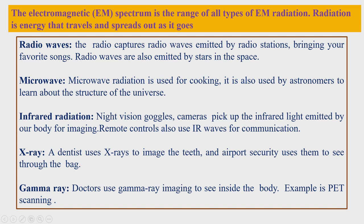The next frequency range is very low frequency, which includes the higher end of human hearing, up to about 15 to 20 kHz. This is the audio frequency range — frequencies that the human ear can listen to. Audio frequencies generally range from 20 Hz to 20 kHz, which is 20 × 10³ Hz.